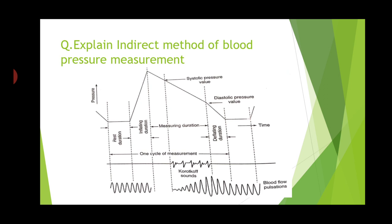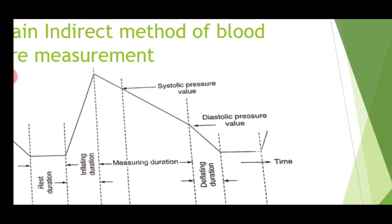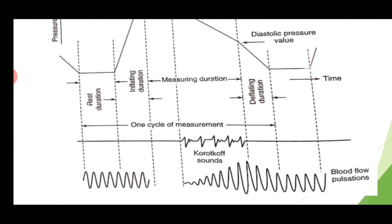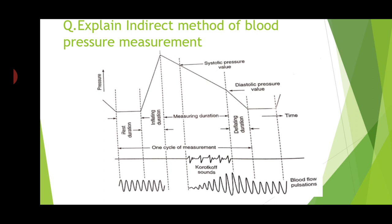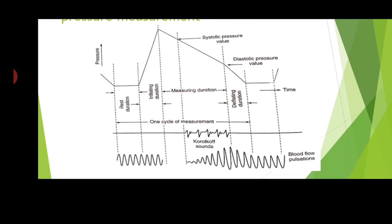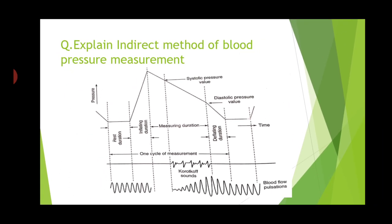Now we will see the explanation of the indirect method of blood pressure measurement. The waveform shows pressure, character of sound, and blood flow pulsation. Before applying pressure, blood flows normally. When cuff pressure increases, blood flow slowly decreases. When pressure rises above systolic pressure, blood flow is totally stopped and we get no pulsation.